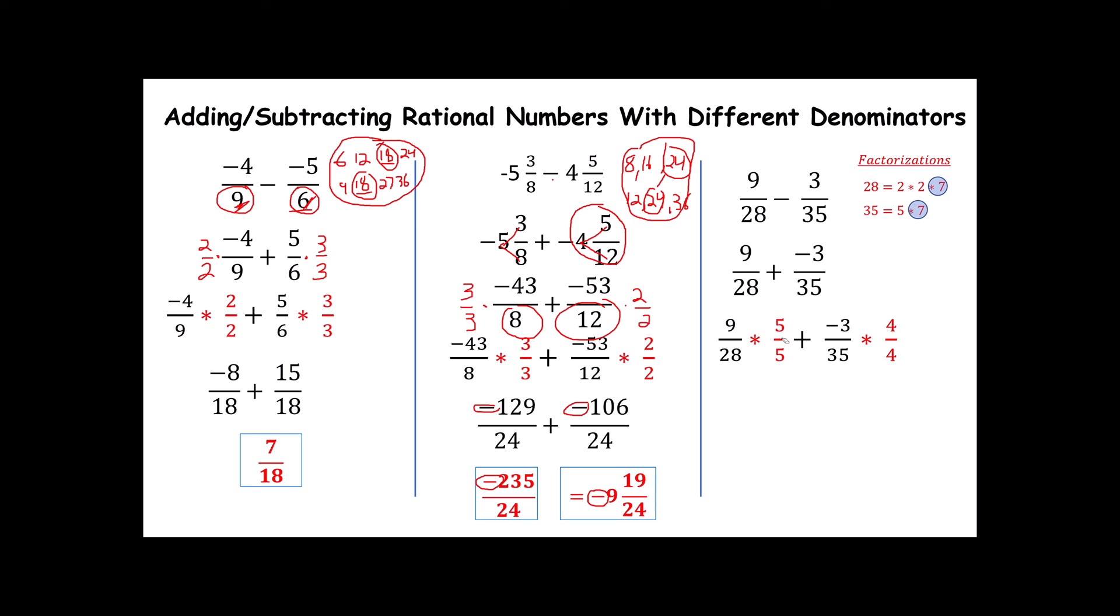When I do that, notice what happens. I get 45/140 and -12/140, which is 33/140. That is already in simplest form.